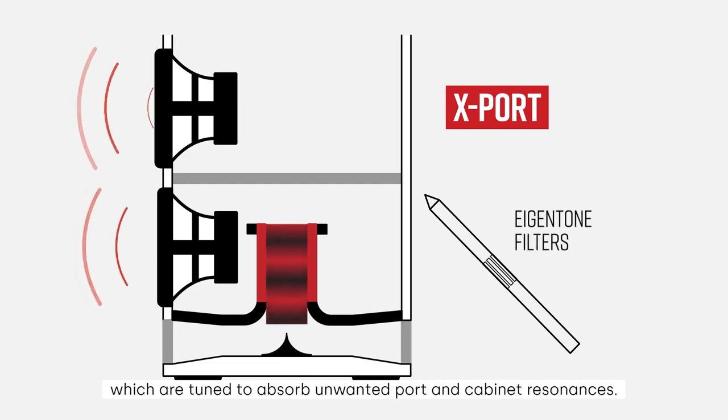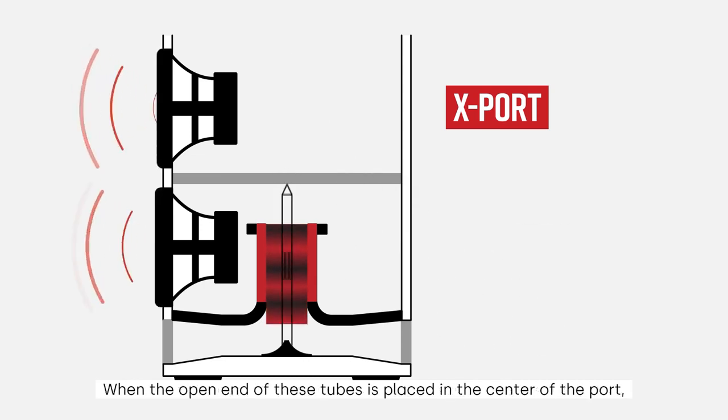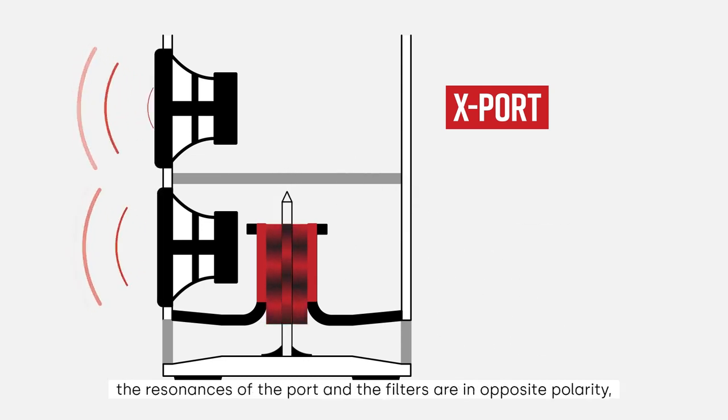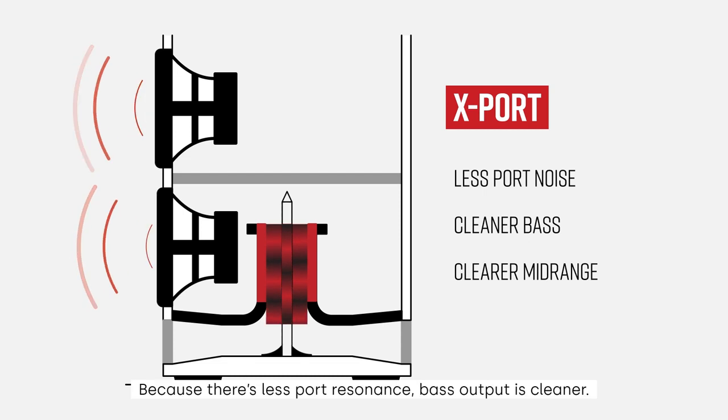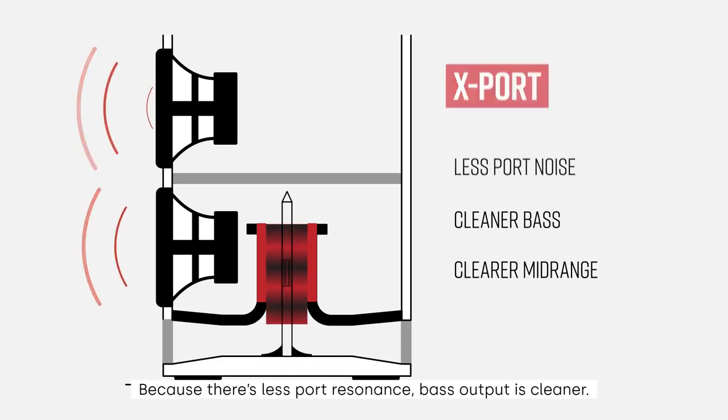When the open end of these tubes is placed in the center of the port, the resonances of the port and the filters are in opposite polarity, so they cancel each other out. Because there's less port resonance, bass output is cleaner.